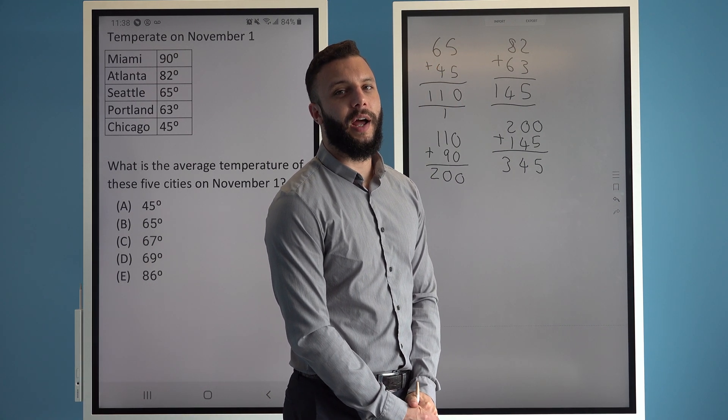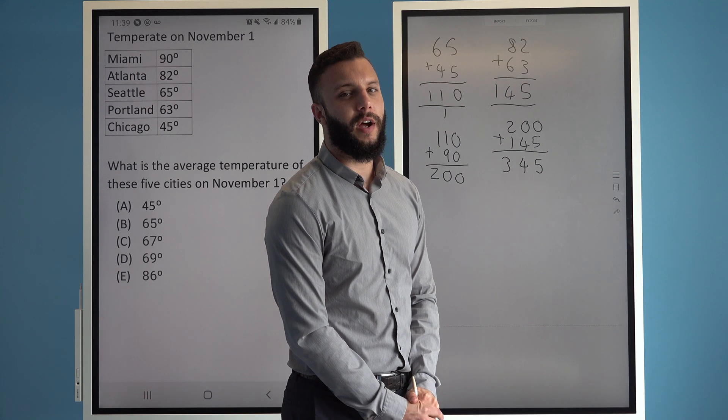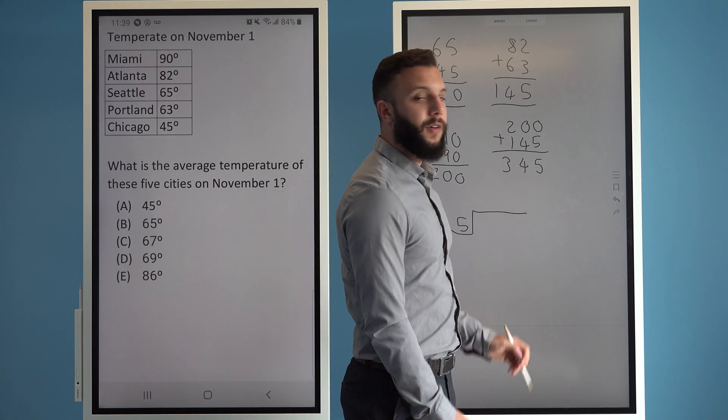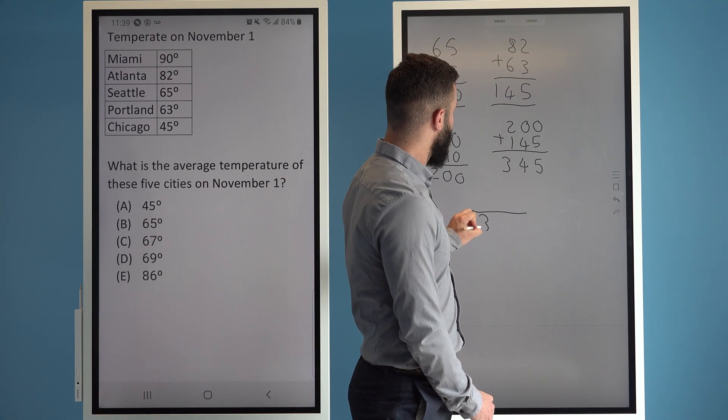All that's left to do is divide by how many values I have which is 5. 345 divided by 5.